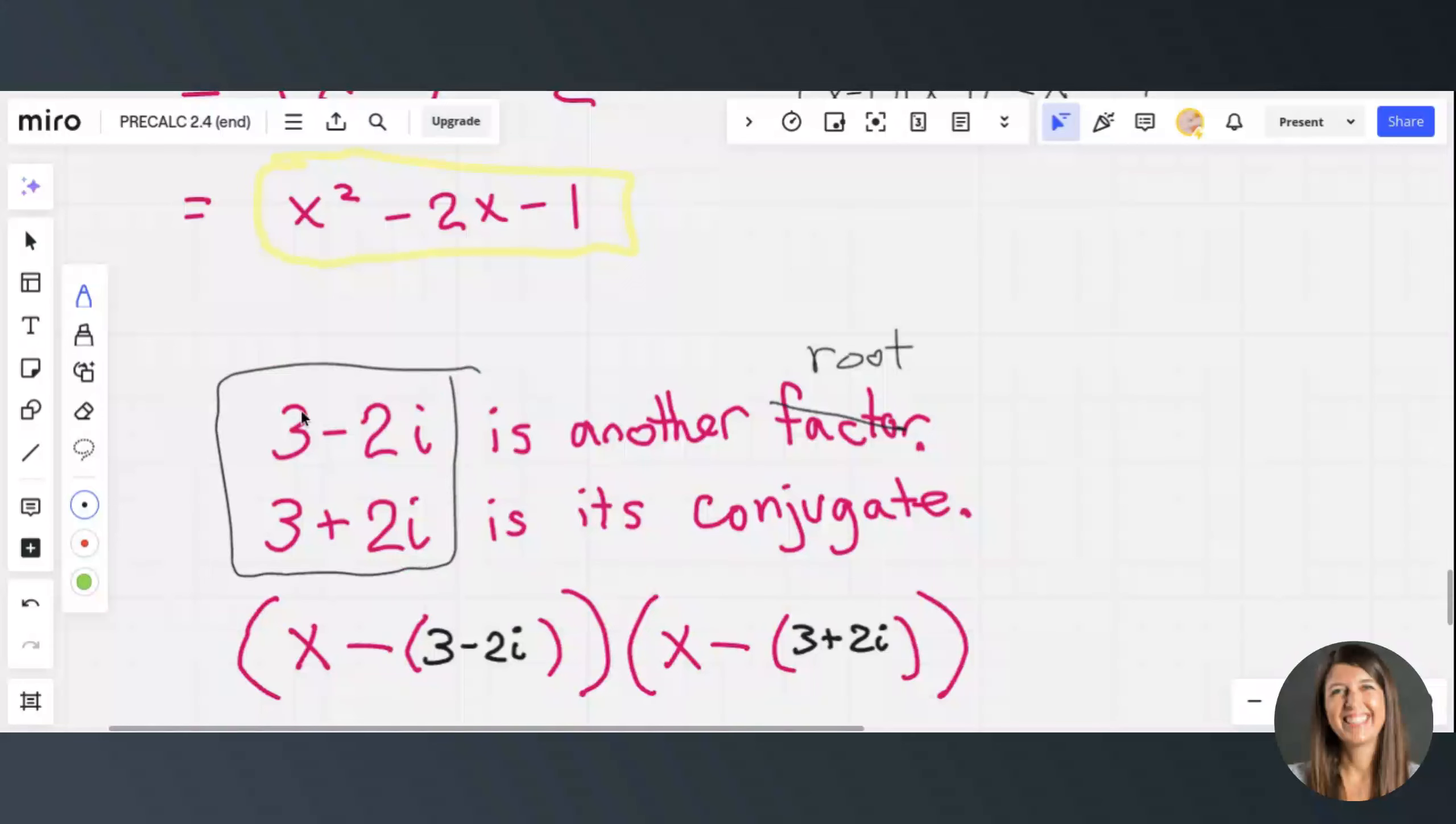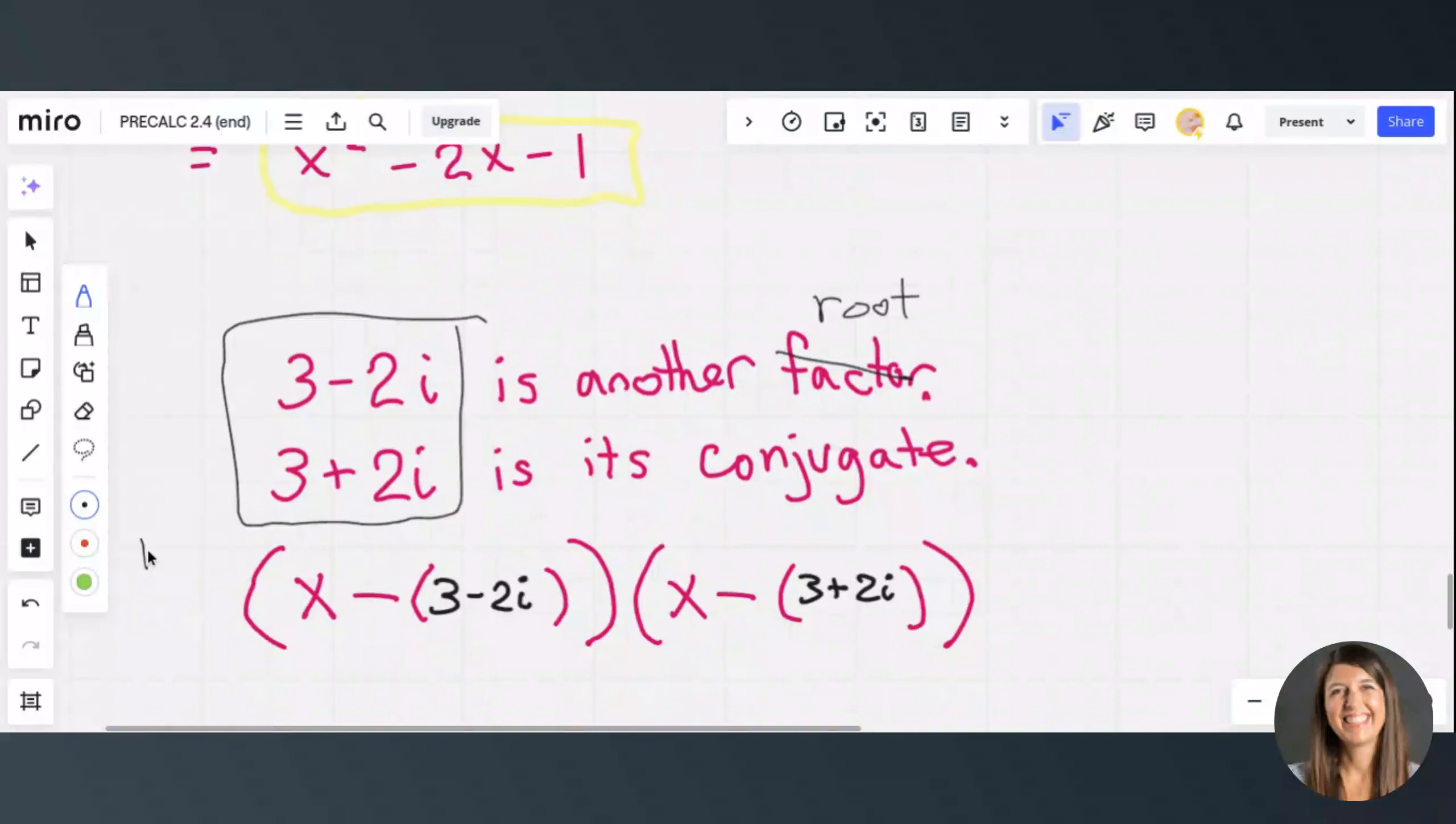Now, if we know these are roots, then these are the factors, the x minus. These are the factors. Even I get mixed up with the language. The roots are the numbers, and the factors are the x minus the number.